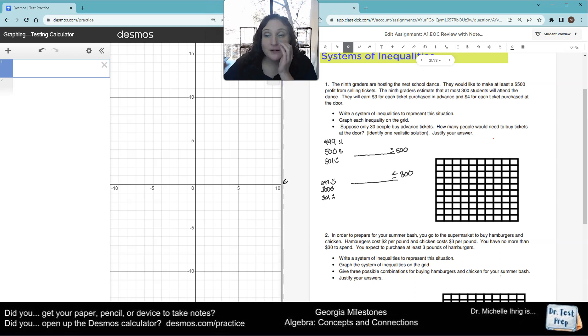Now, here we're talking about money, and here we're talking about students. So we also have to keep that in mind when we come up with our next ones. So it says they earn $3 for each ticket in advance, and then $4 for each ticket purchase at the door. So we're going to say X equals advanced, and we're going to say Y equals door.